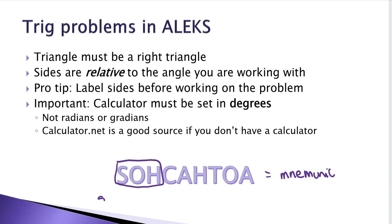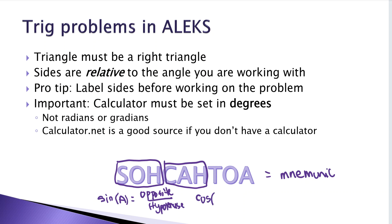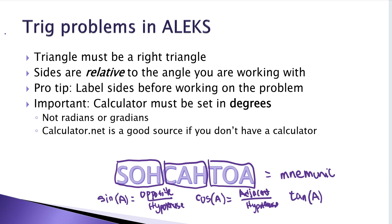SOH stands for: the sine of an angle is equal to the opposite side divided by the hypotenuse. CAH: the cosine of an angle is the adjacent side over the hypotenuse. And TOA: the tangent of an angle is the opposite side over the adjacent. I'll be using SOHCAHTOA in our problems as well.